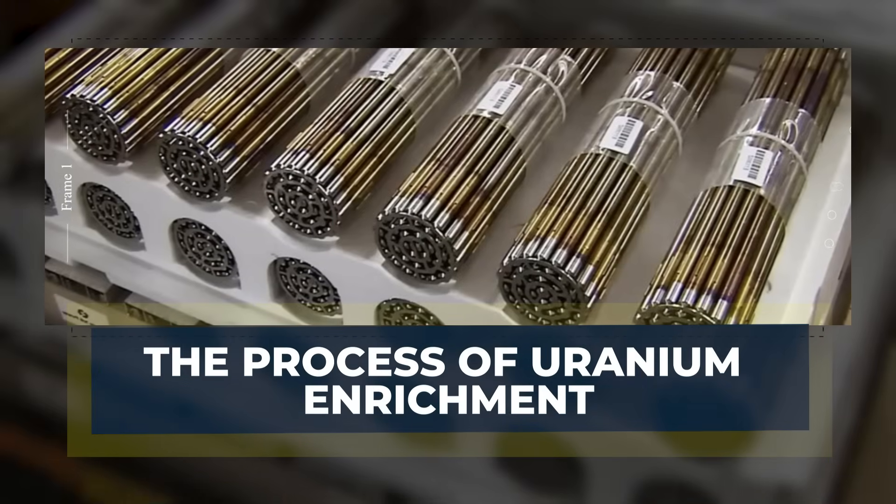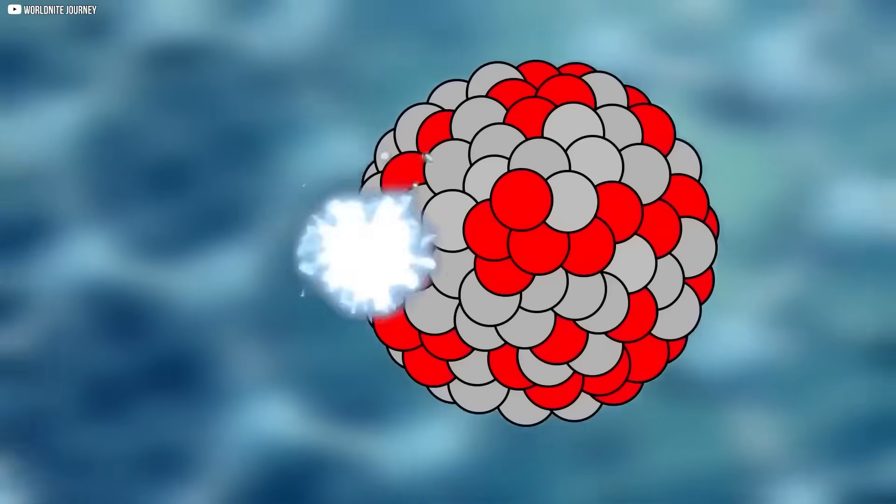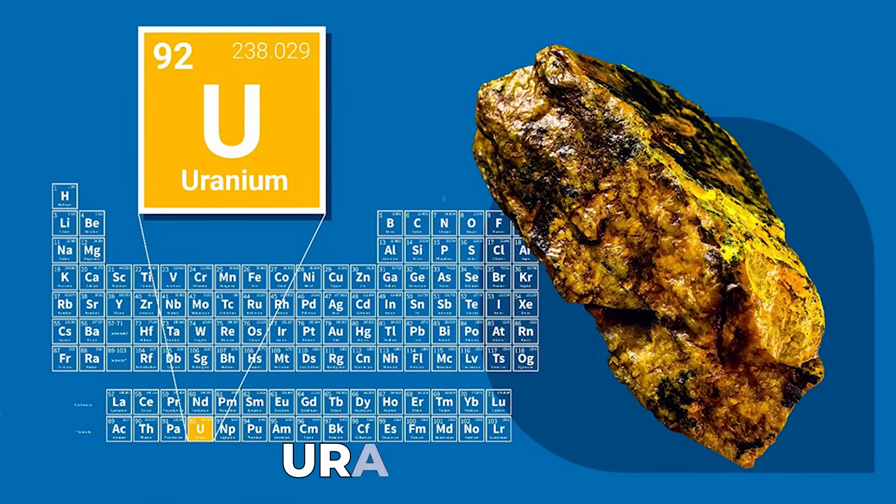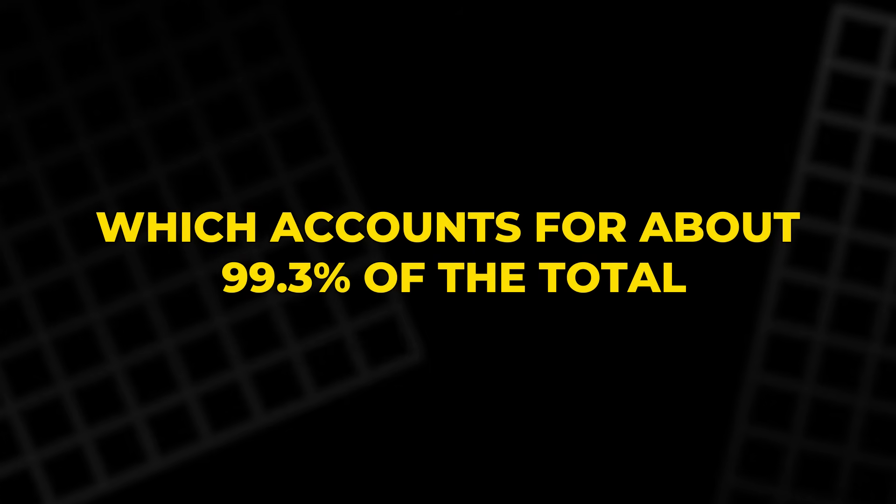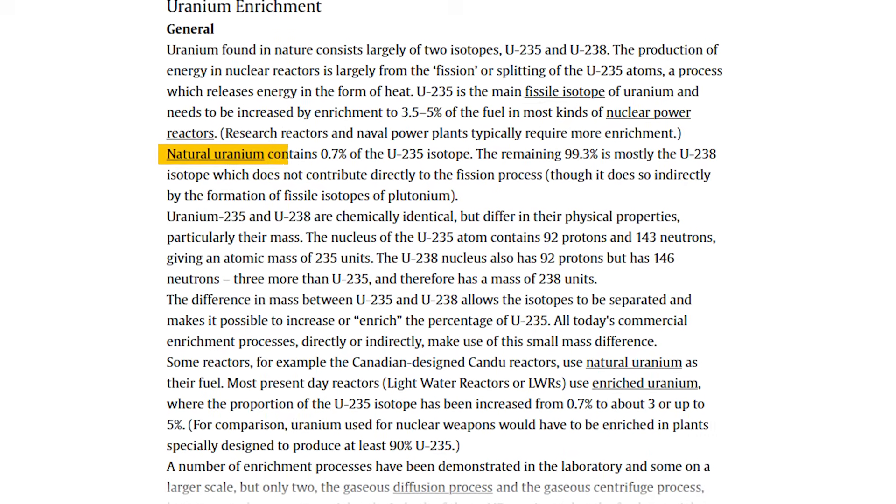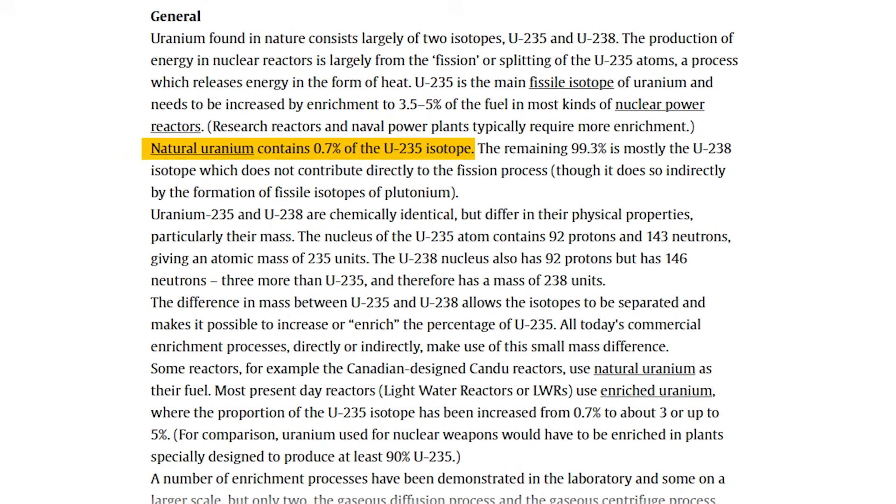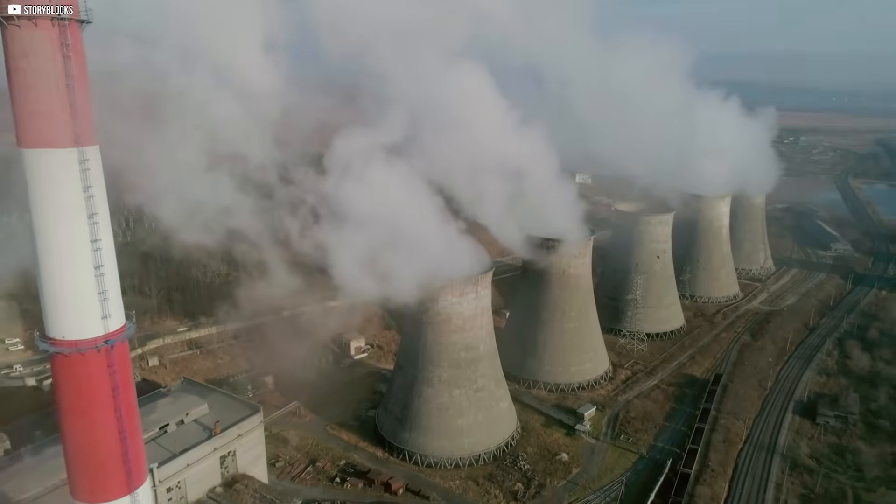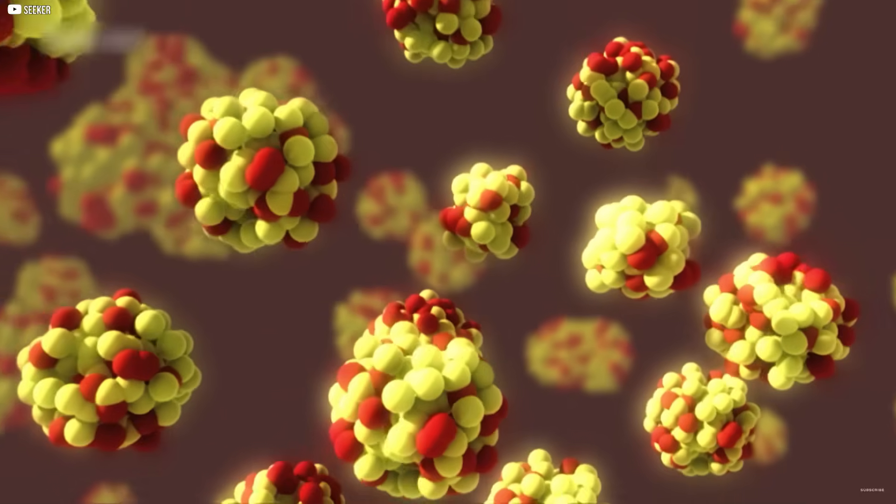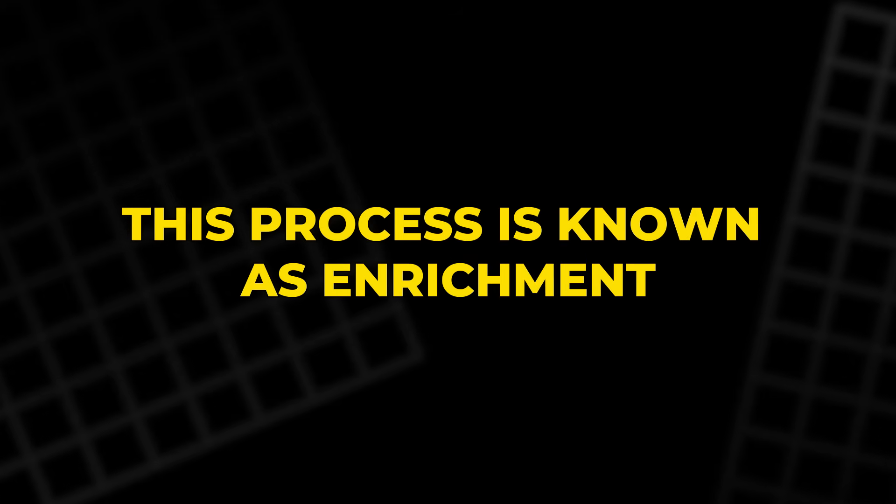The Process of Uranium Enrichment. Uranium, in its natural state, isn't ideal for nuclear fission due to its composition. It consists mainly of uranium-238, which accounts for about 99.3% of the total, and only a small fraction, around 0.7%, is uranium-235, the isotope needed for fission. This presents a challenge. To harness uranium's power for energy generation, the proportion of uranium-235 must be increased. This process is known as enrichment.